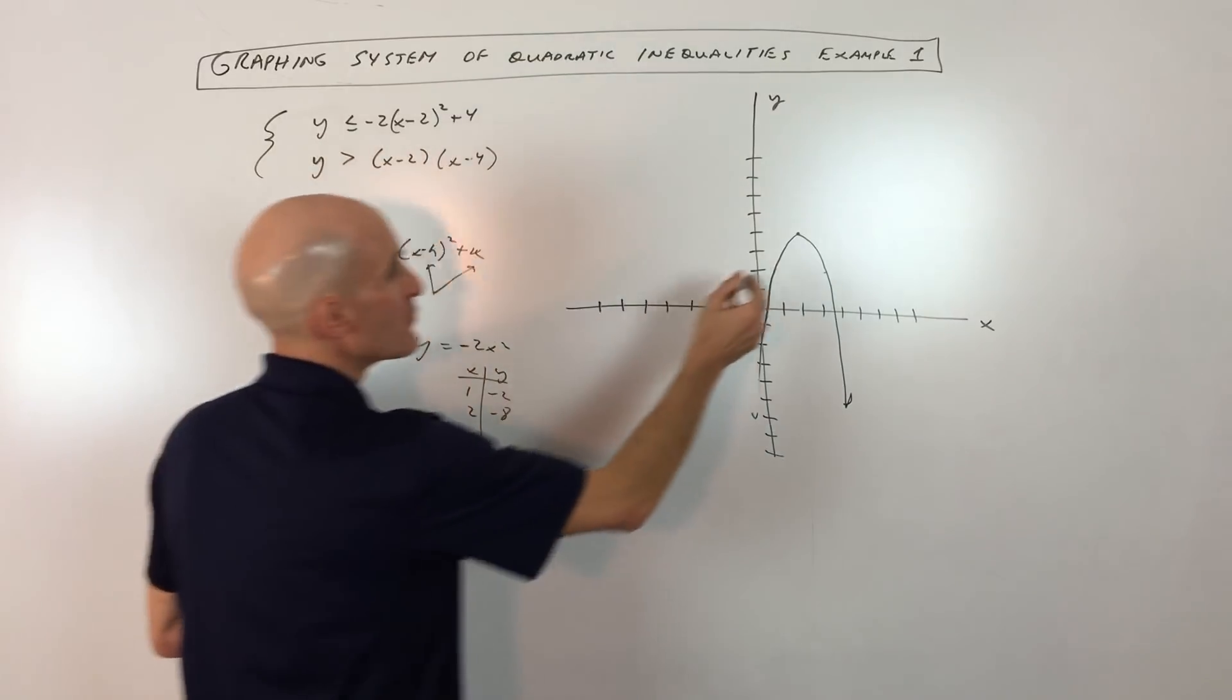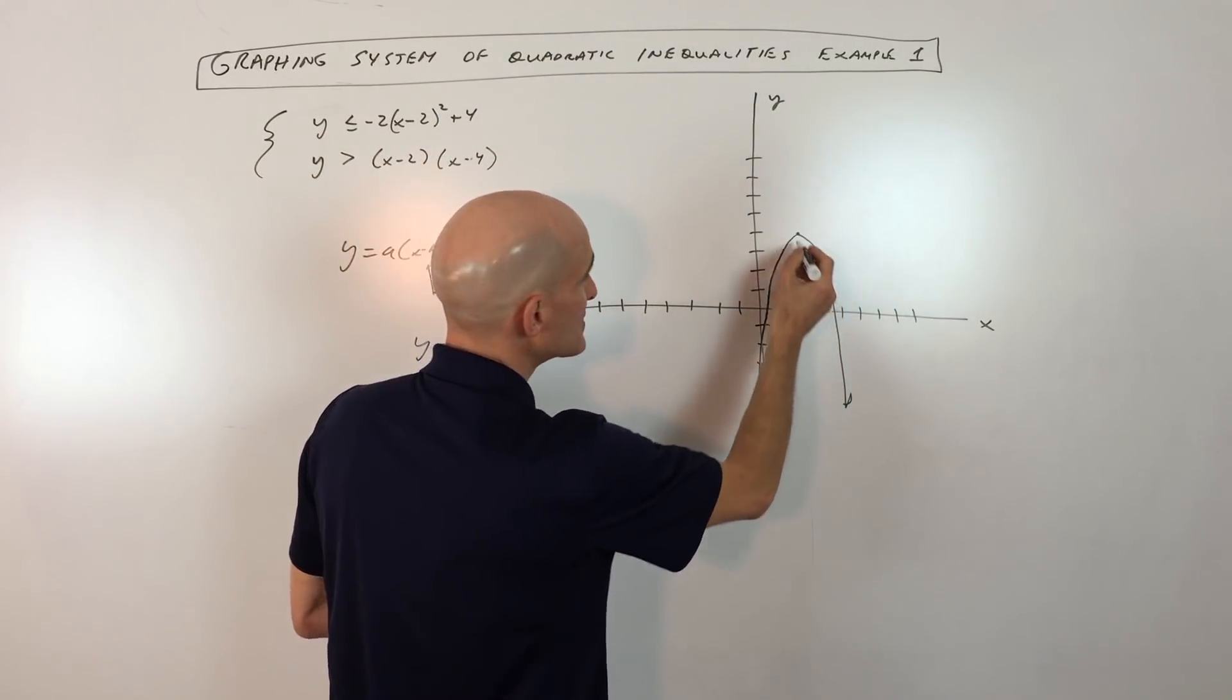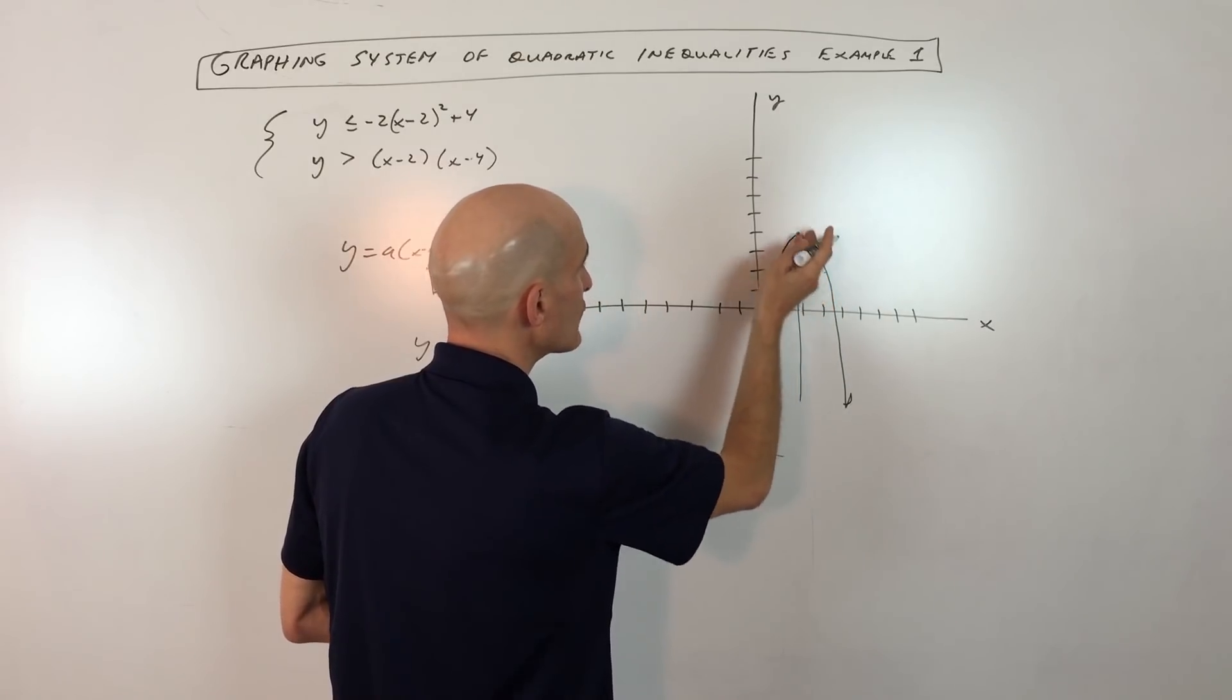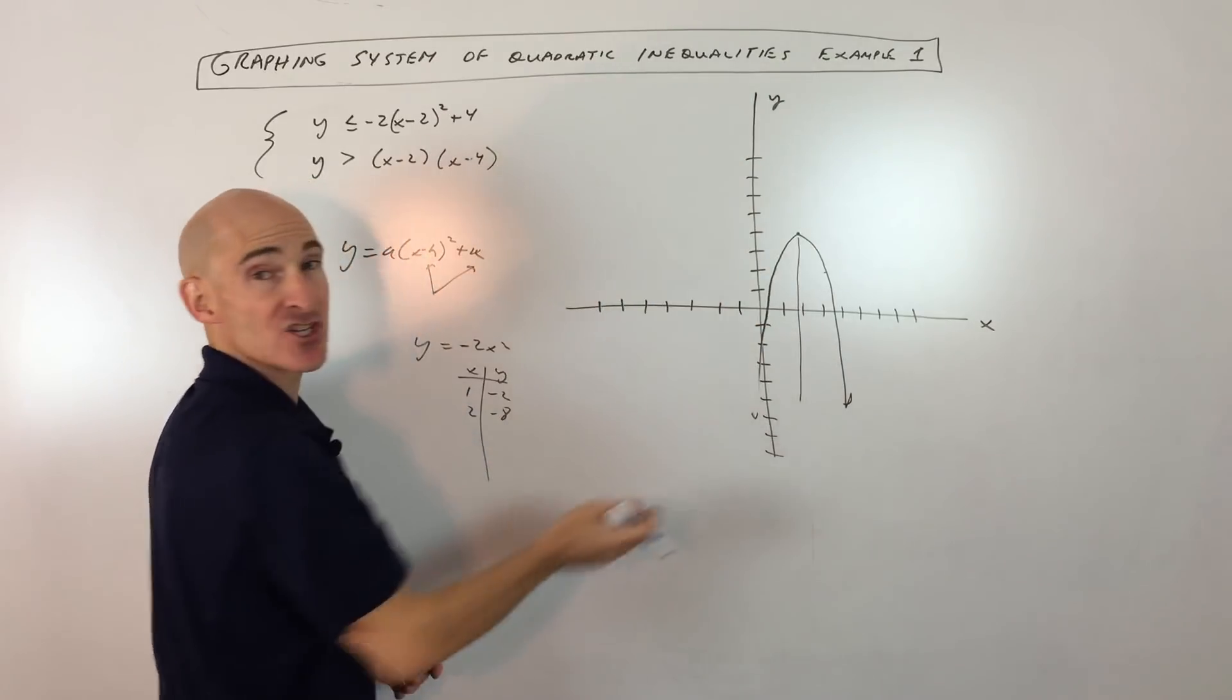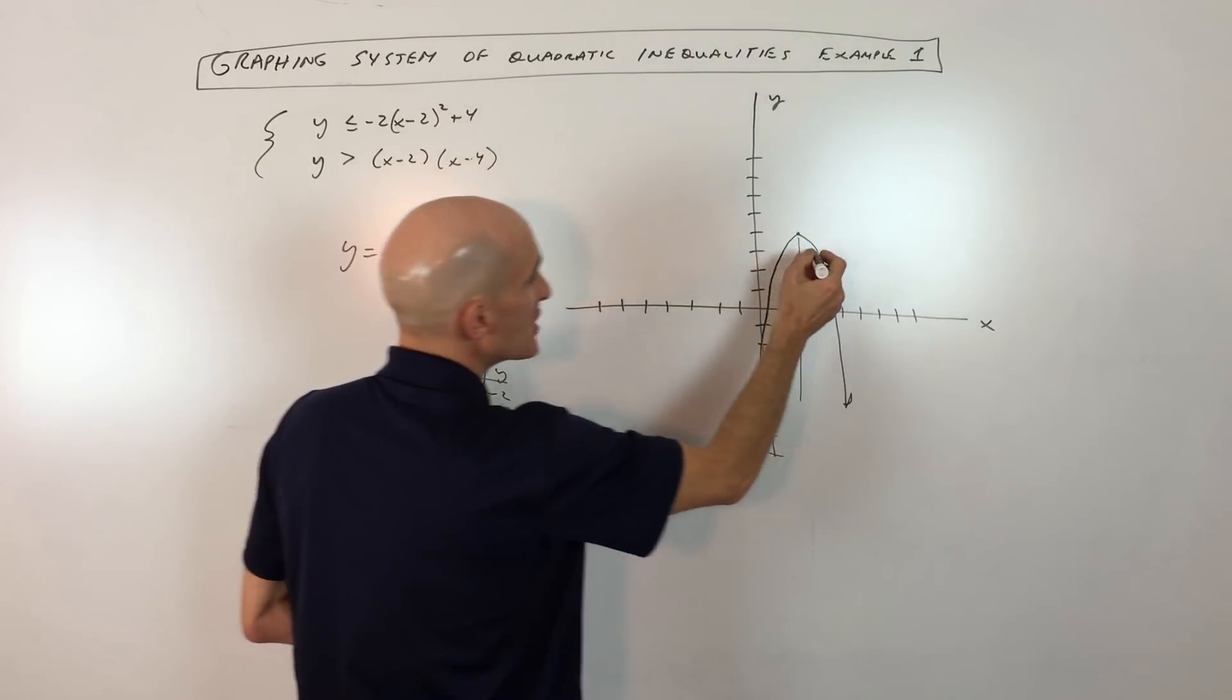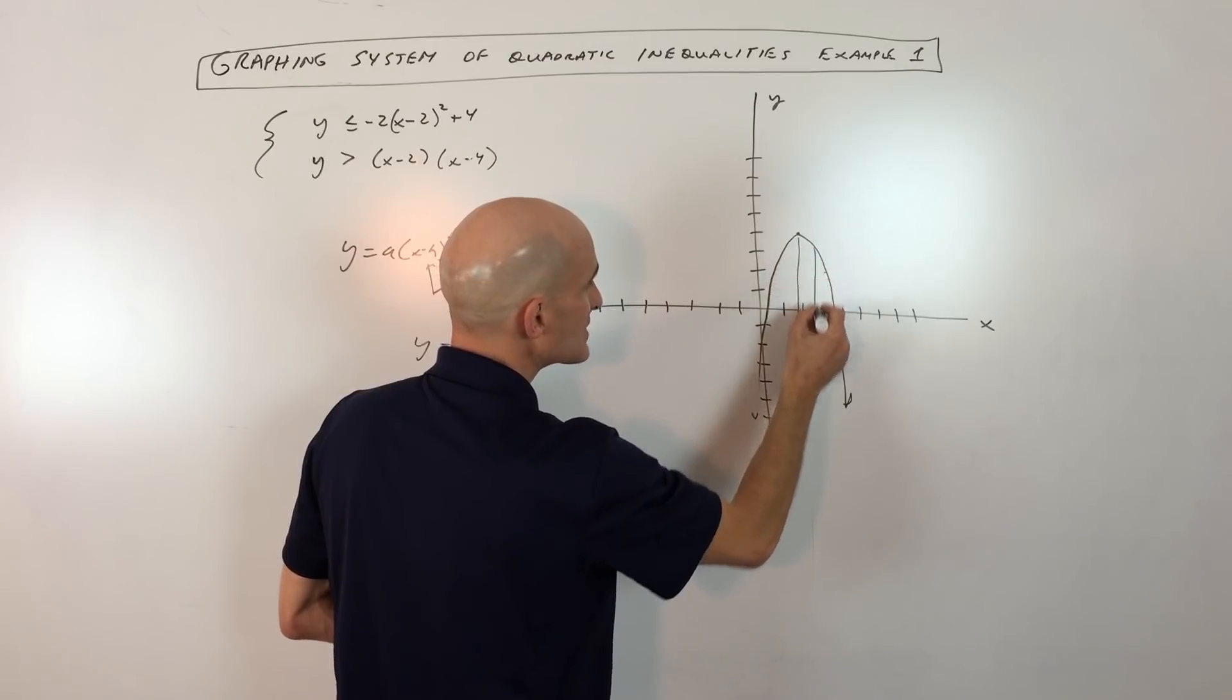Less than or equal to means that if we pick any point on the graph, let's say like for example the vertex, less than means we're shading down. If it was greater than, we're shading up. Because remember y, the y controls the vertical direction, up and down. So less than, we're shading below. So I picked this point on the graph, less than would be below.